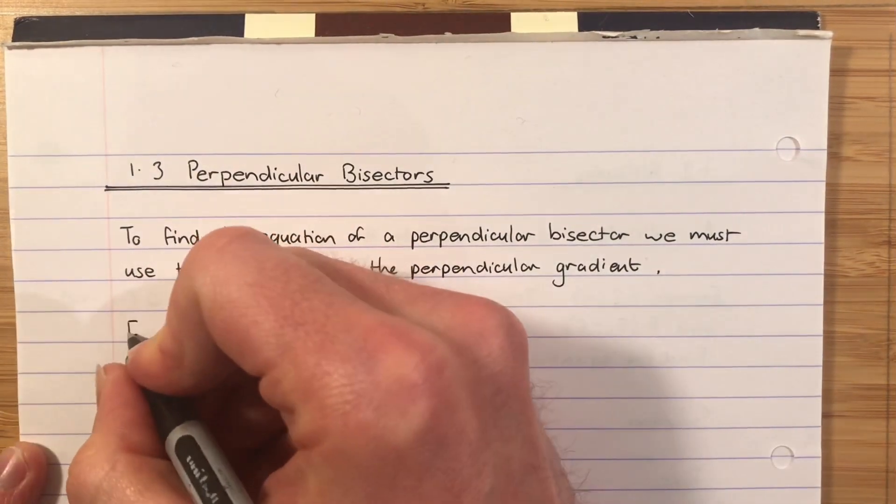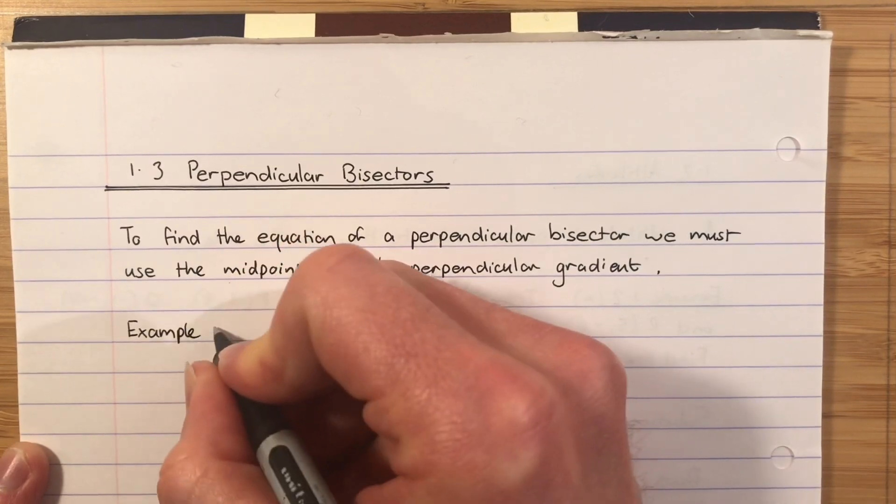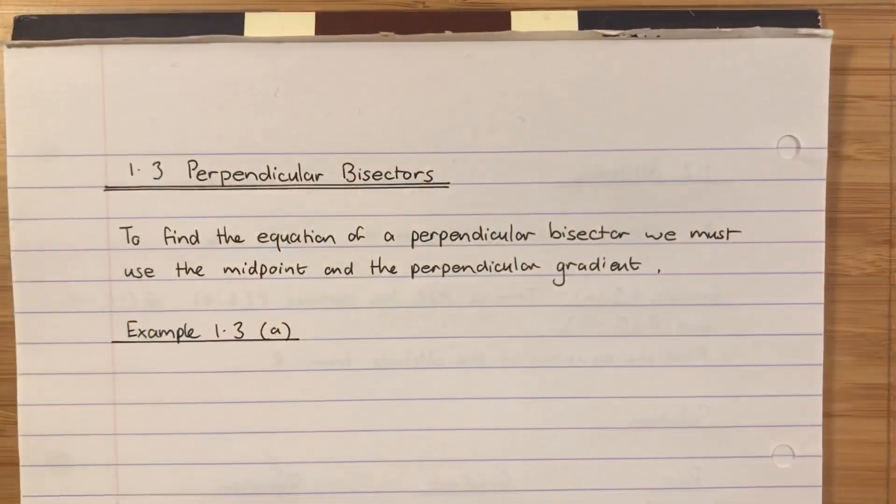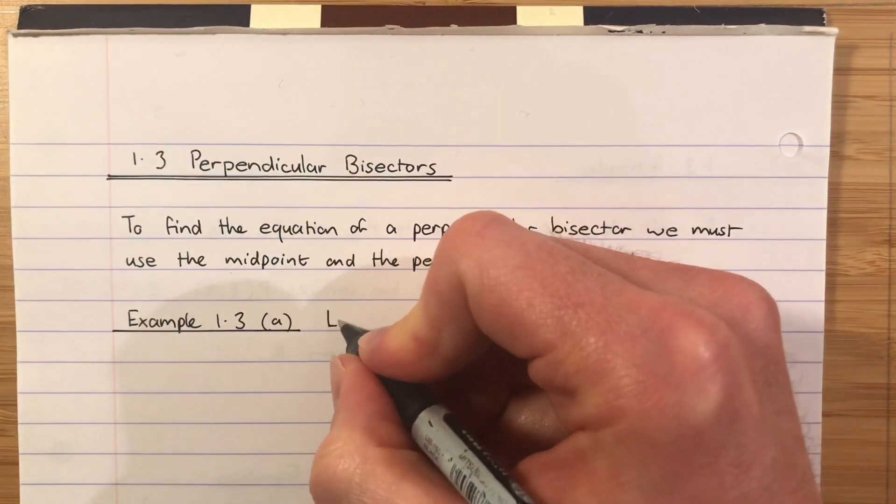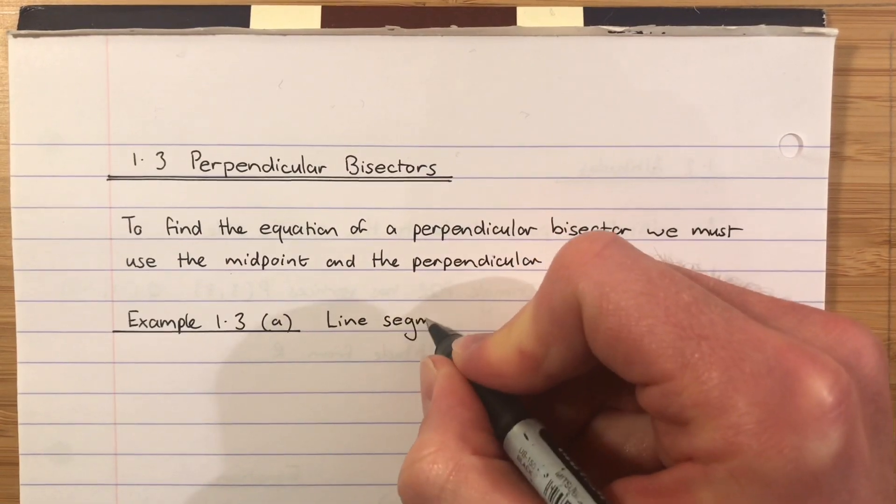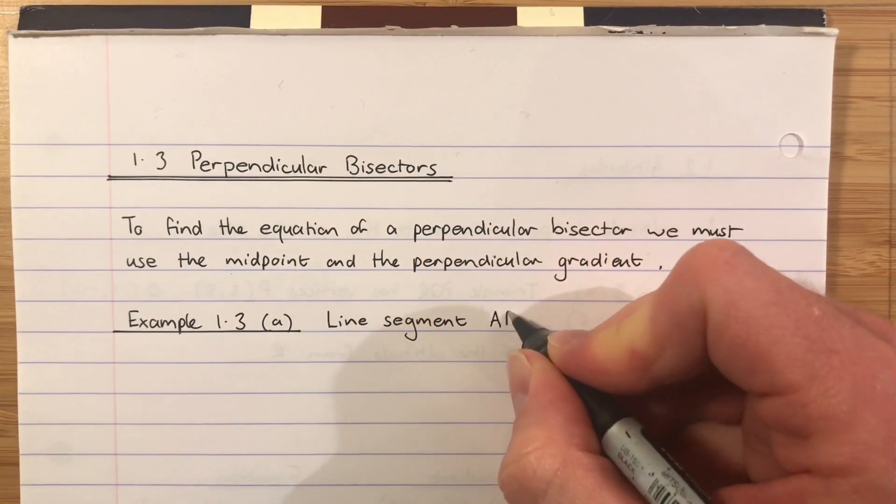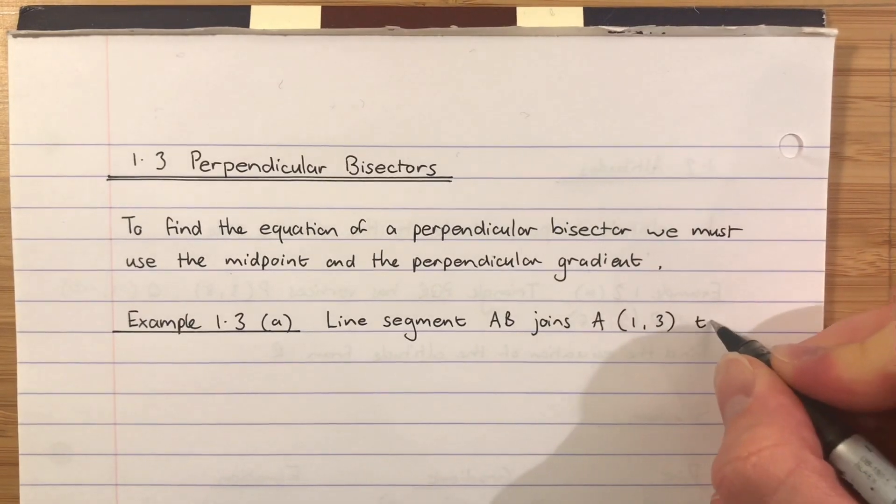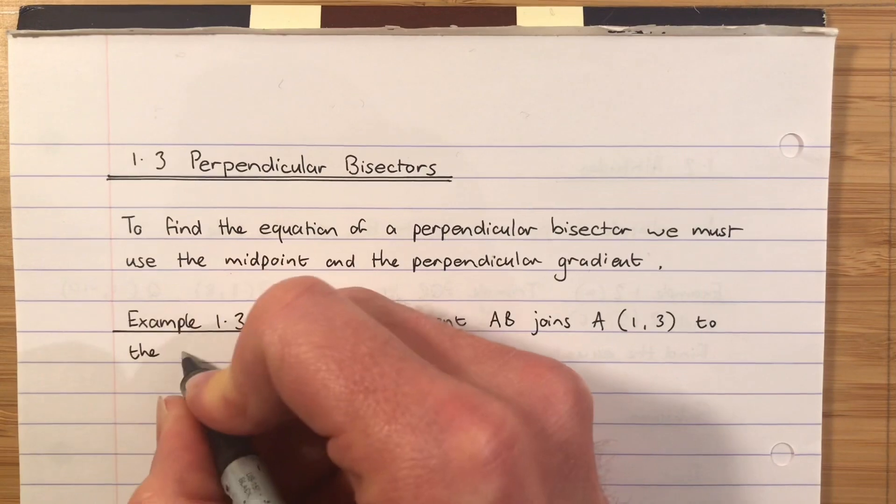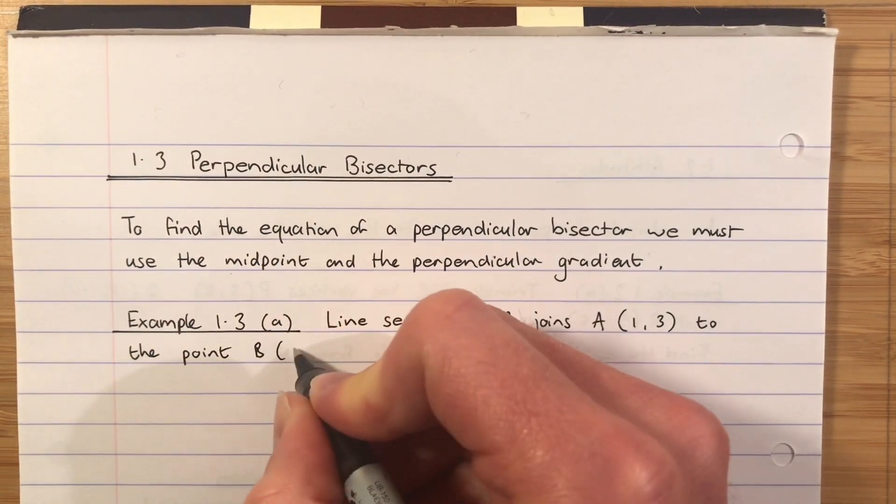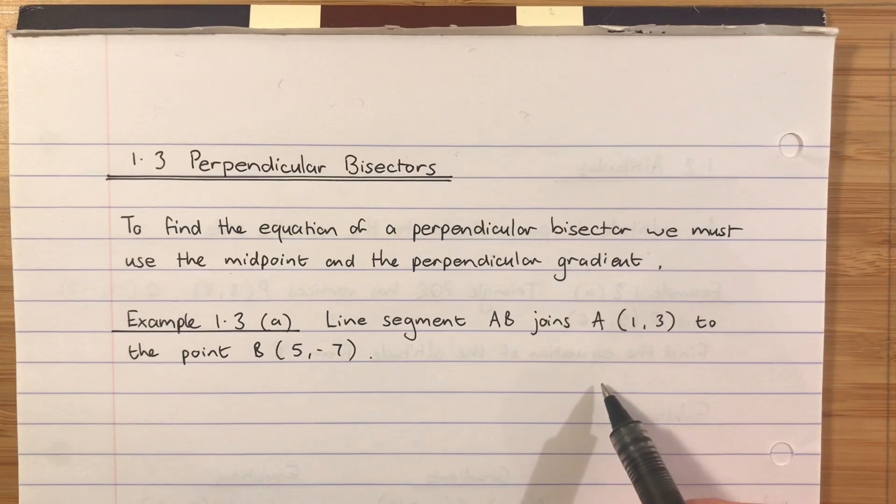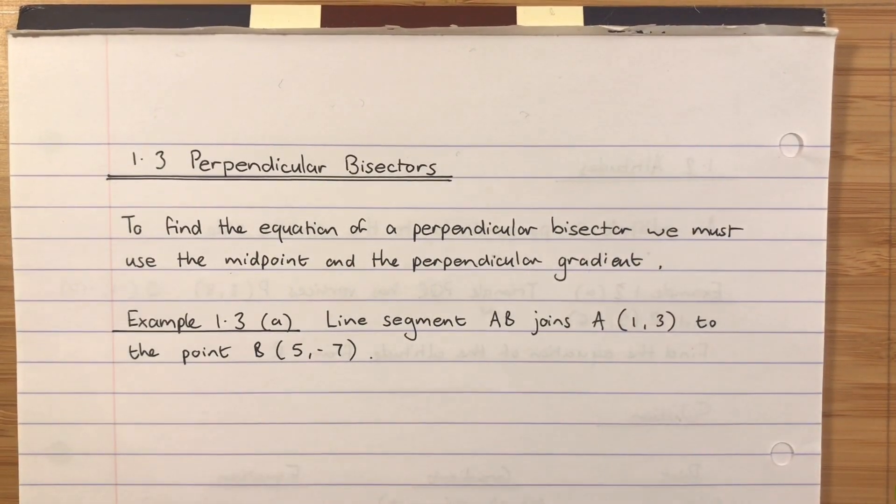Right, let's do example 1.3a. So we'll say line segment AB joins A, which is the point (1,3) to the point B, which is (5,-7). Now perpendicular bisectors don't have to be in a triangle, which is why we're just talking about a line segment. We're just talking about a line which joins A to B.